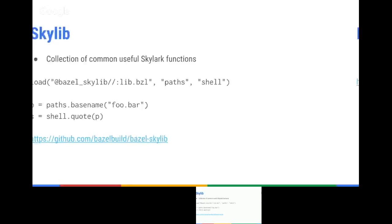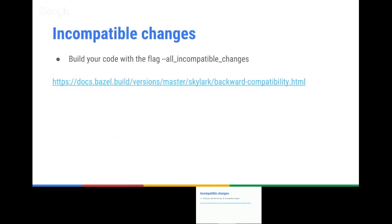We are doing a lot of changes in Bazel, and some people complained about it. So we added a flag, --all_incompatible_changes. When we make a backward-incompatible change, we first put it behind a flag so it's not enabled by default, but it allows you to try it. If you build your code with this flag, it will try the future changes and allow you to make your code compatible with the upcoming Bazel version. In the future, we swap the default of the flags. If you didn't update your code, you can still get the old behavior for some time until we definitely remove it.